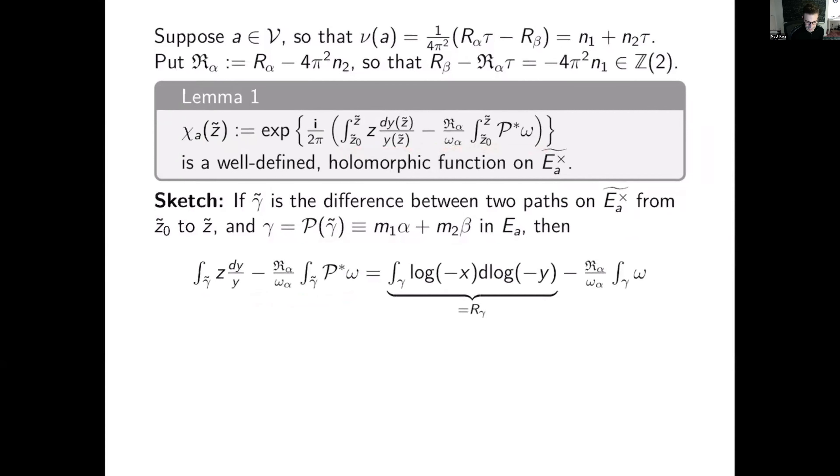Then the integral in the exponential evaluates in the following way. First, I have log minus x d log minus y integrated over gamma. That's just r gamma. And then I have the integral over gamma of omega. So I can evaluate this because the regulator is a linear map on homology, if you will. And then my period of omega evaluates like this. Same m1 and m2 as here. And then I just compute. And I see that I get 4 pi squared times an integer. And so the difference between taking the two paths is irrelevant once you plug it into x to the 1 over 2 pi i. Okay.